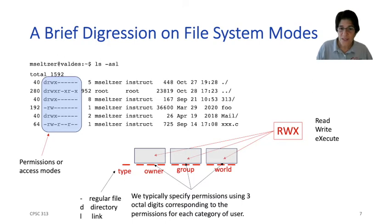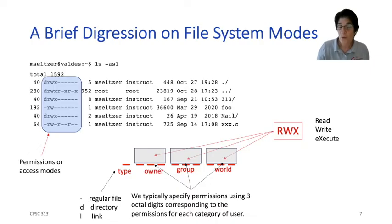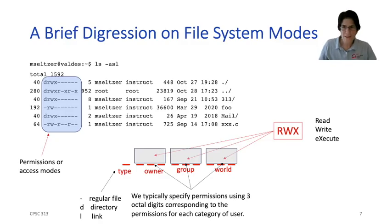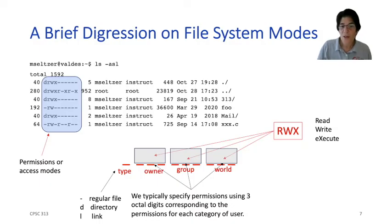The way we typically write those permissions is that since we have three bits for each mode, that corresponds to one octal digit — octal being base eight. So you specify the octal digit corresponding to each permission set. Knowing your binary-to-octal conversion is handy here: read-only access is 400, because there's a one in the read bit and two zeros. Read-write access is 6 — a one in read and a one in write. And read-write-execute is 7 — one, one, one.